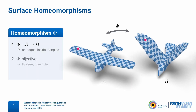These maps are bijective, so they are free of fold-overs. And bijectivity also implies that they are invertible, so we don't have to worry about the mapping direction. And finally, homeomorphisms are continuous in both directions. So when moving a point around on one surface, its image on the other surface follows continuously without any jumps.